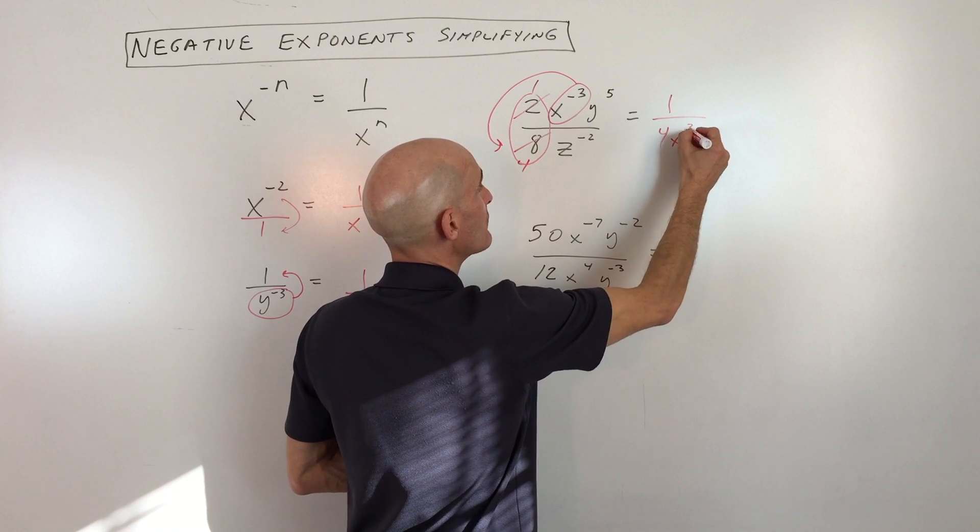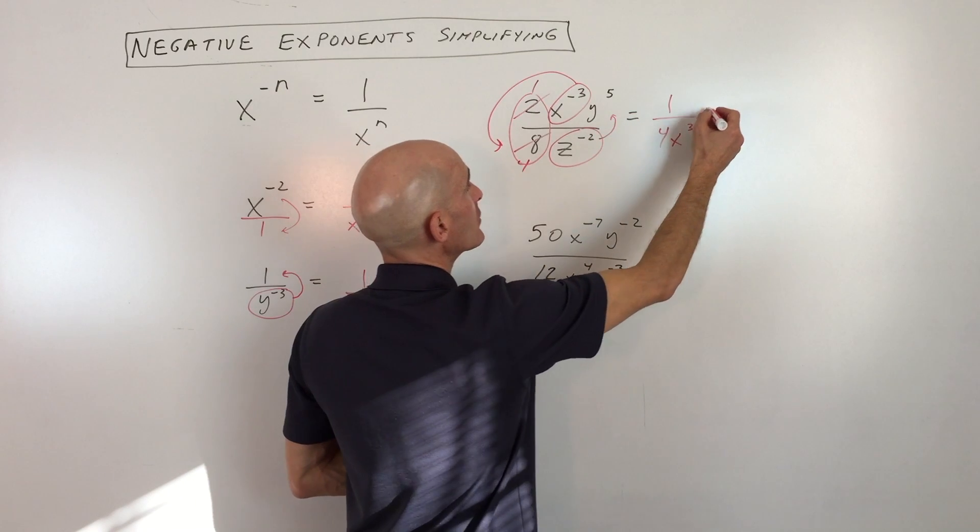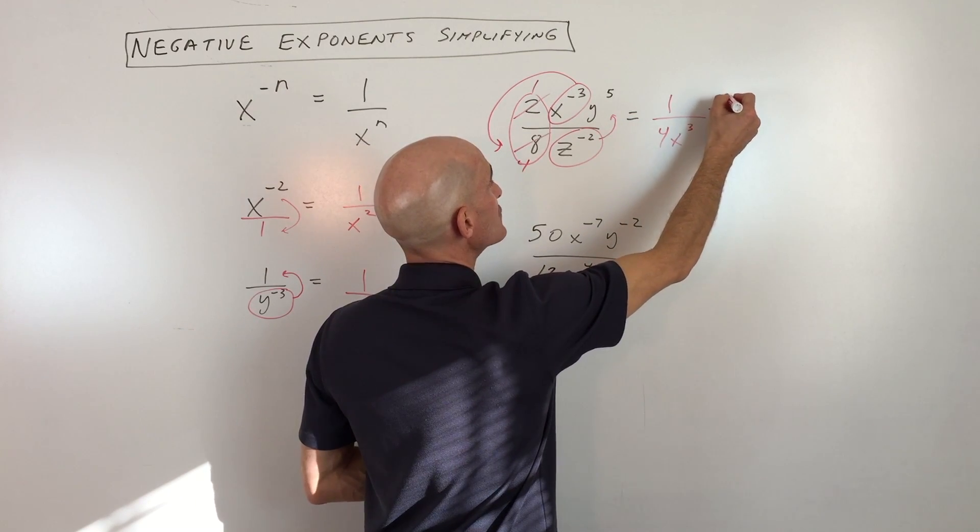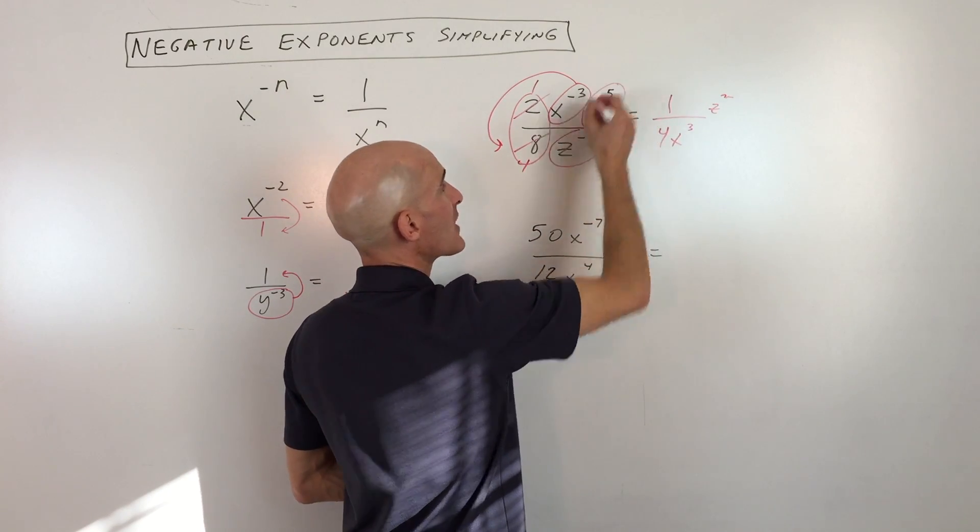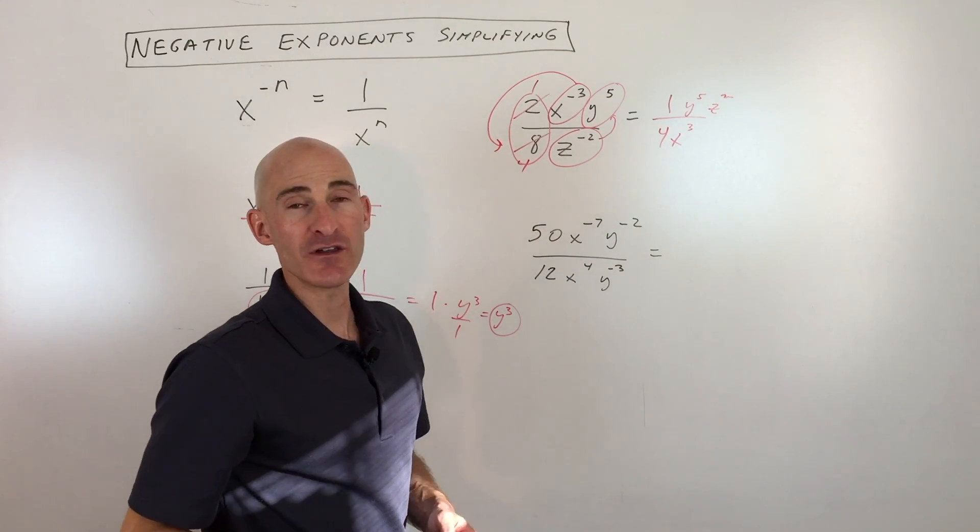We've got x to the negative 3. Let's move that to the other side of the fraction bar, make that x to the positive 3. Here we've got z to the negative 2. Let's move that to the numerator and make that z to the positive 2. And then y to the 5th already has a positive exponent, so we're just going to leave it where it's at in the numerator: y to the 5th.